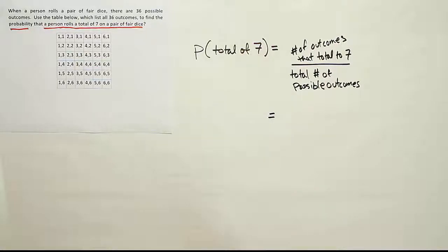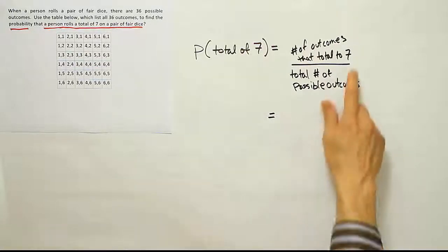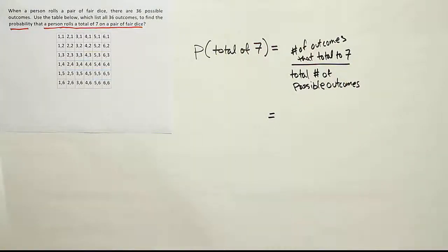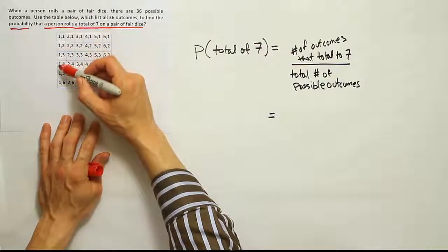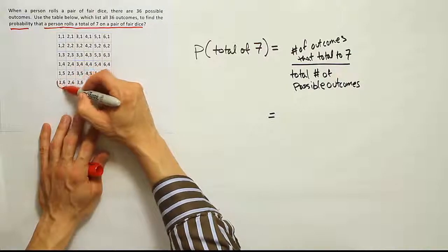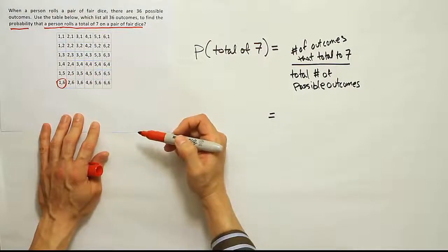So when I go through this grid, I can see that going down the first column, that's 2, that's 3, that's 4, that's 5, that's 6, that's 7, right? That's the first total in the first column that we see that equals 7.